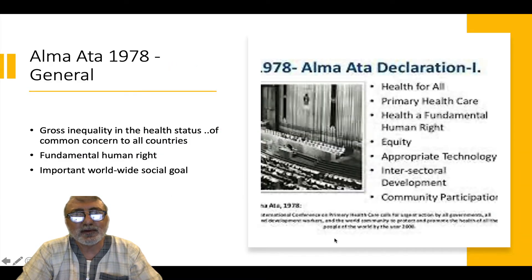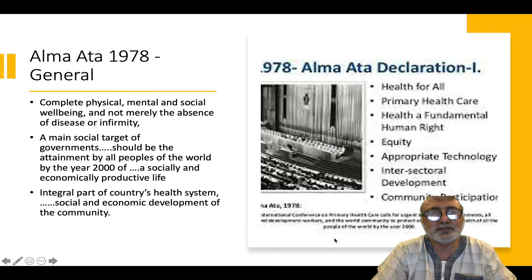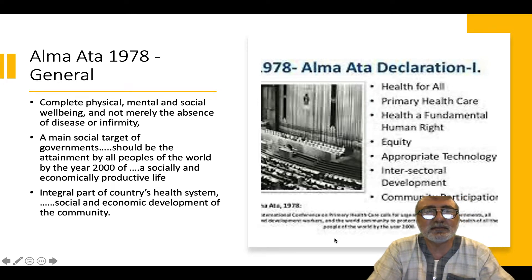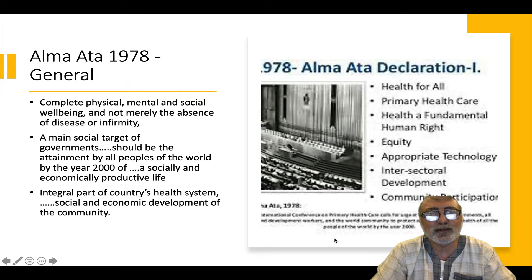Let's start with the Alma-Ata in 1978. It is a very seminal document. It talks about the gross inequality in health status which is of common concern to all countries, that it is a fundamental human right to have health and that health is an important worldwide social goal. It also speaks about health being complete physical, mental and social well-being and not merely the absence of disease or infirmity — an important idea.